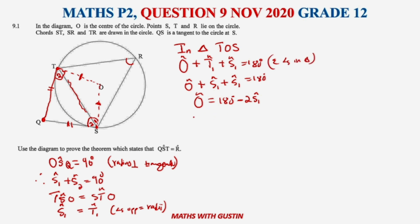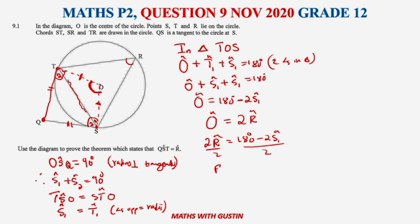Therefore O equals 180 minus 2·S1. Now we know that the angle at the center is twice the angle at the circumference. So angle O equals twice angle R. Substituting, we get 180 minus 2·S1 equals 2R. Dividing everything by 2, R equals 90 minus S1.